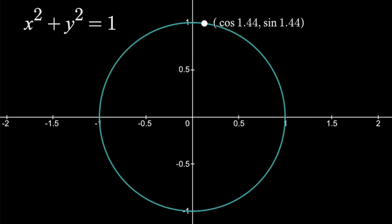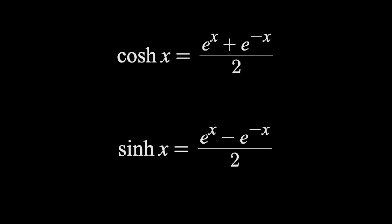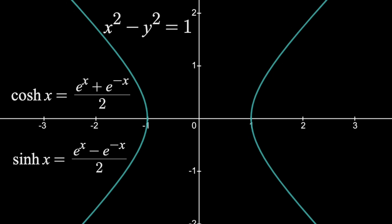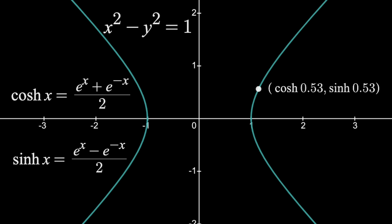Now hyperbolic trig seems completely unrelated at first. Hyperbolic cosine involves adding two exponential terms and dividing by 2, and hyperbolic sine is just about the same but with a minus sign on the numerator. However, hyperbolic trig and these expressions go hand-in-hand with a hyperbola that has the equation x squared minus y squared equals 1. If we plot hyperbolic cosine comma hyperbolic sine of some input — really just the same as plotting this with an input of 0.5 in the exponents — then the point will lie on the hyperbola. And as we change that input, the point simply moves along our curve.